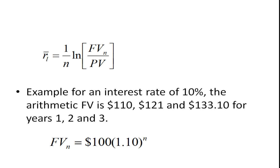So let's take a look at an example here. Suppose the interest rate is 10 percent. Well the arithmetic future value is going to be 110, 121, 133.10 for years 1, 2, and 3. You can calculate that by the standard future value formula here, 100 times 1.10 raised to the nth power. You can see that if you multiply 100 times 1.1 to the first power that will be 110, and if you raise it to the second power 121, and then third power is 133.10.